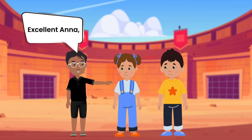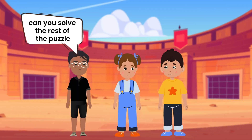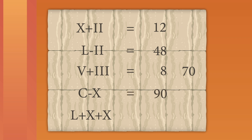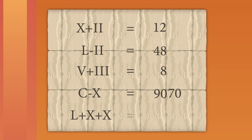Excellent, Ana. Now, Peter, can you solve the rest of the puzzle? Yes, Banu. The fourth one means 100 minus 10, which is equal to 90. And the fifth one means 50 plus 10 plus 10, which is equal to 70.